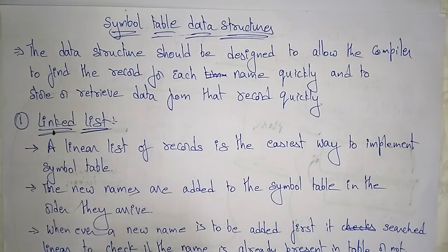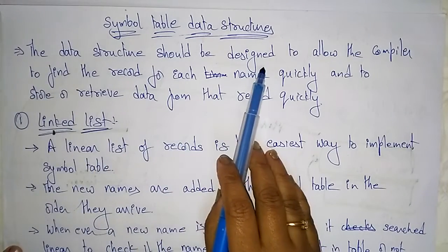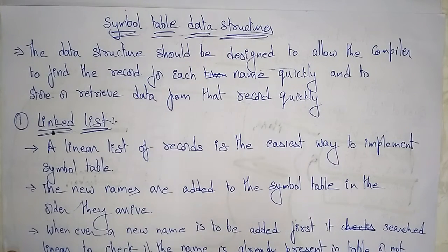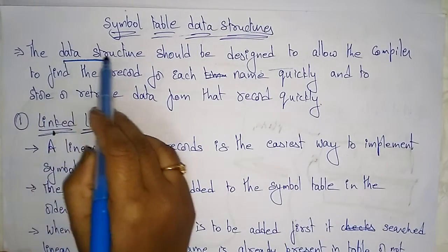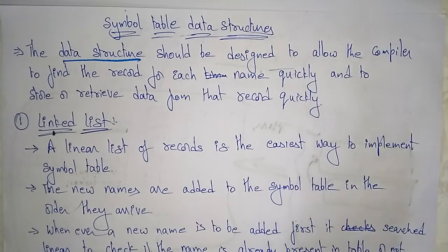Let's continue with the symbol tables topic. In the previous video I explained what exactly the symbol table was and how you are going to implement it. Now let's see the symbol table data structures. The data structure should be designed to allow the compiler to find the record for each name quickly and to store or retrieve data from that record quickly. Symbol tables are used to store information regarding the program, and with the help of data structures, the compiler gathers, stores, and retrieves information quickly while compiling programs.